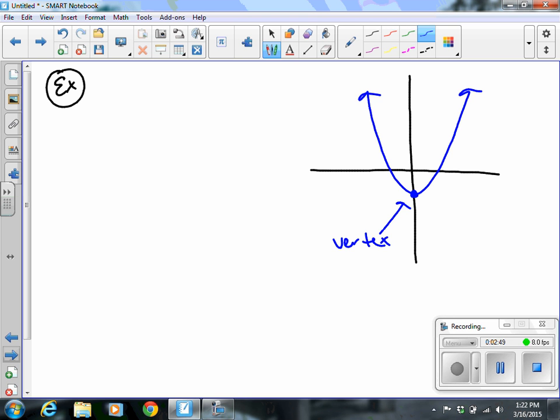Your vertex also holds the axis of symmetry. Now some of you might be thinking, what is the axis of symmetry? The axis of symmetry is where you can cut that u in half, and if you fold that, it would match up.